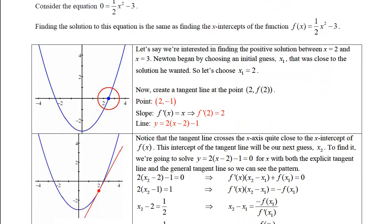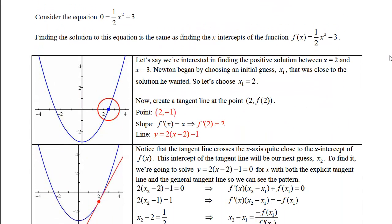Consider the equation 0 equals 1 half x squared minus 3. Finding the solution to this equation is the same as finding the x-intercepts of this function, f(x) equals 1 half x squared minus 3.